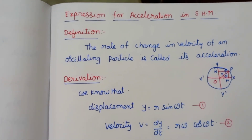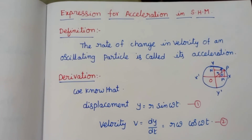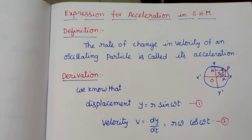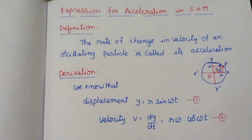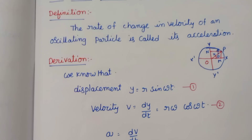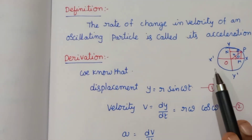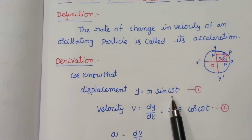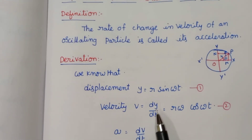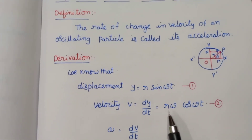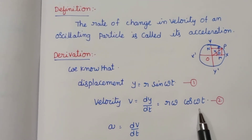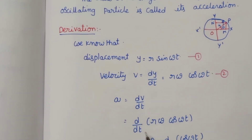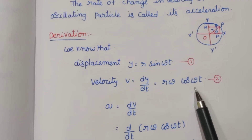Now, the expression for acceleration in simple harmonic motion. Acceleration is defined as dv/dt — the rate of change of velocity. Using the same diagram and explanation, from the displacement equation y = r·sin(ωt), the velocity is dy/dt = r·ω·cos(ωt).